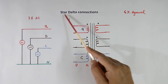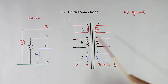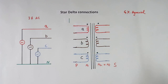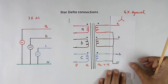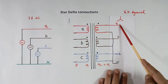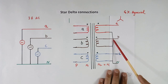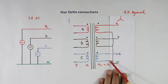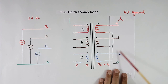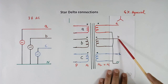We learned star and delta connection of the primary. Now the secondary can also be connected in star and delta both ways. In star connection, one terminal of each phase — A, B, C — goes to the load. The other terminals of all 3 windings are shorted together and called neutral. So we get 4 wires. The voltage of each phase winding appears between that line and neutral.